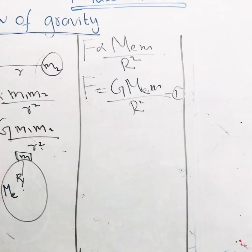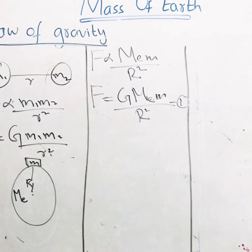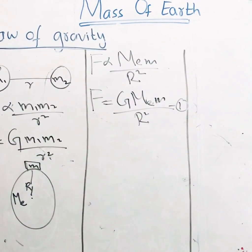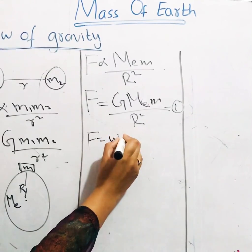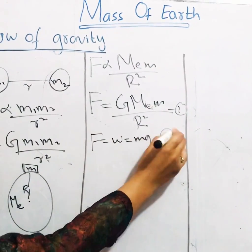But the force with which Earth attracts the object towards its center is equal to the weight of object. I mean force is equal to W which is equal to mg. This is my equation 2.